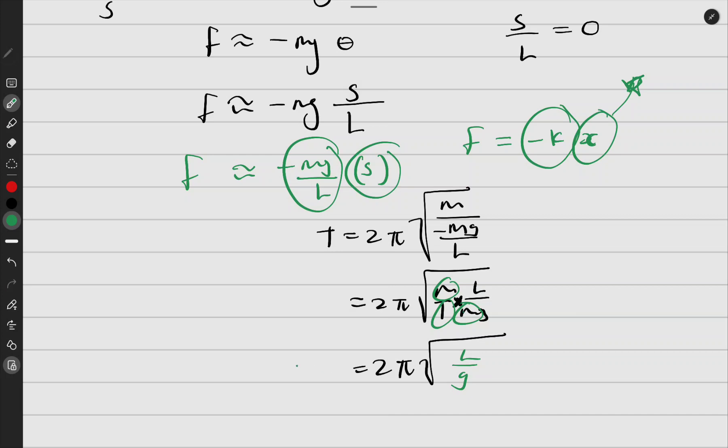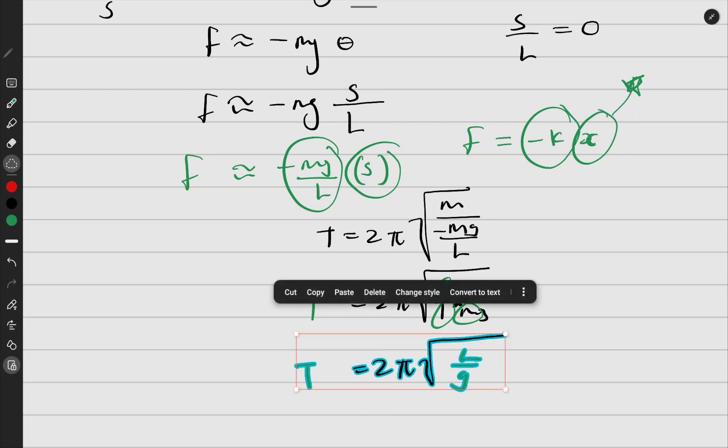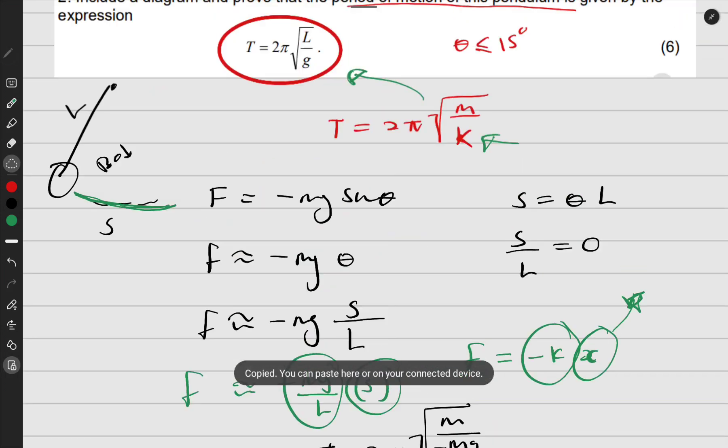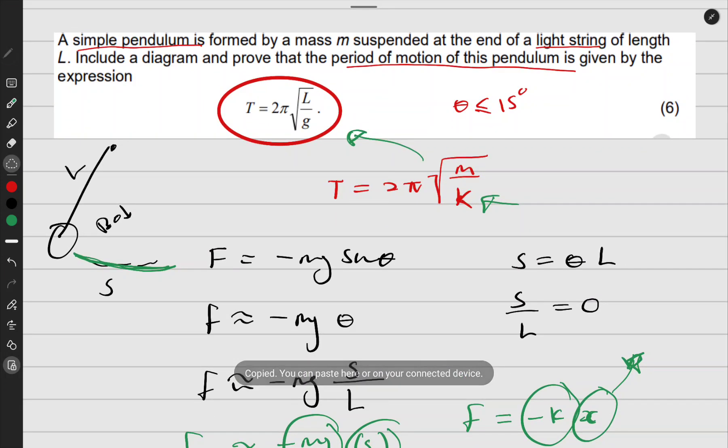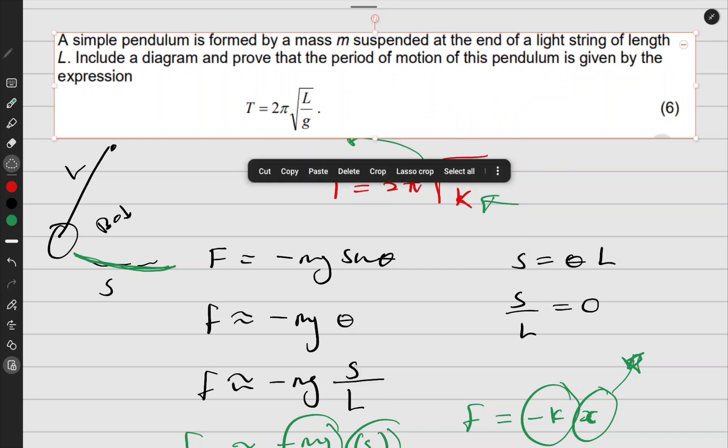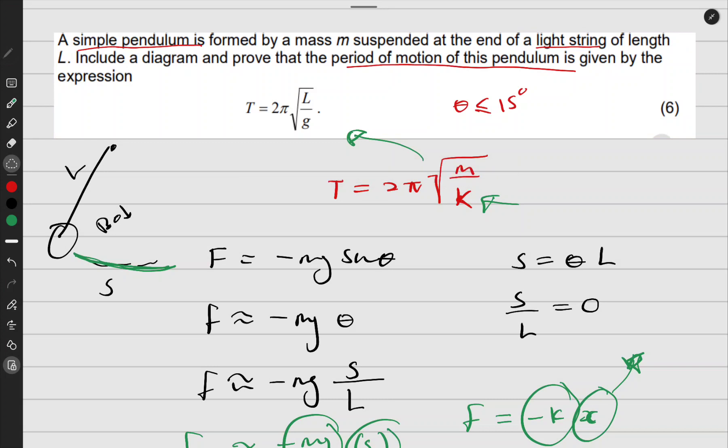That equals the period. Let me just go back to check if we get something close to that. 2π, L, g. So it looks the same.